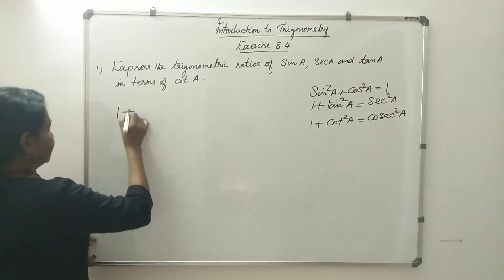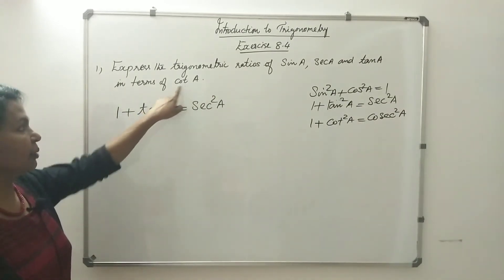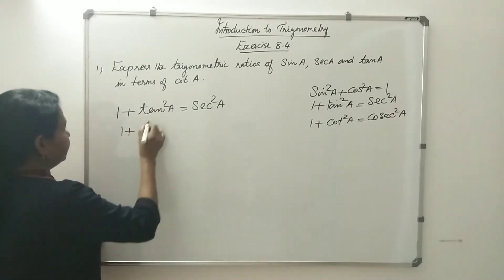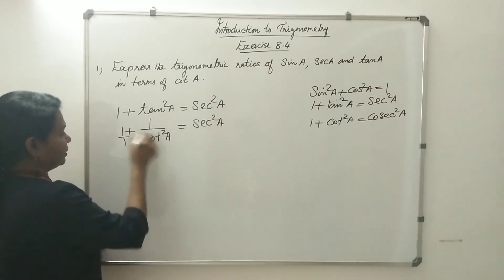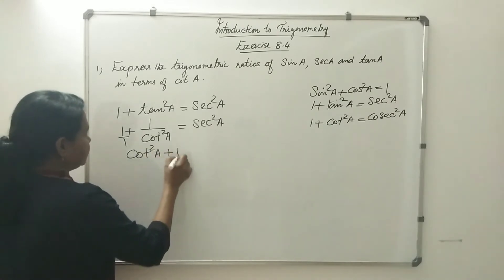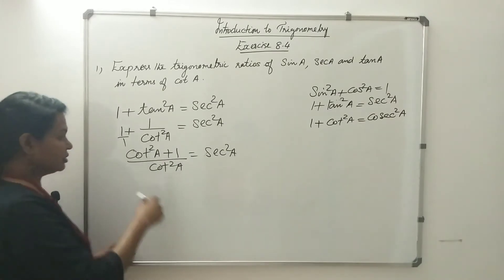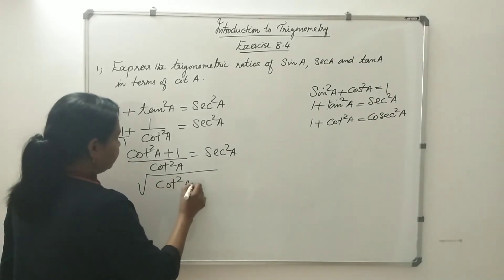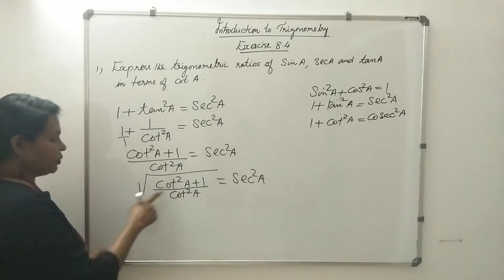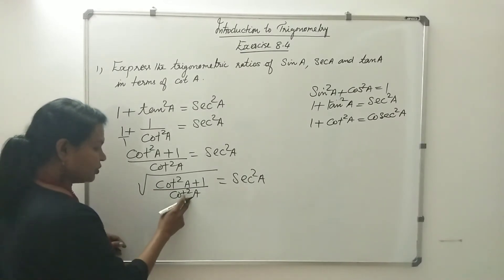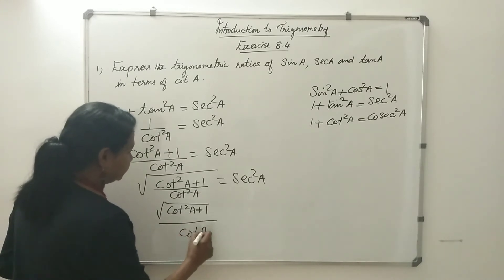Now, 1 plus tan²A equals sec²A. We use secA in terms of cot. Since tanA equals 1 divided by cotA, we write 1 plus 1 divided by cot²A equals sec²A. That gives us (cot²A plus 1) divided by cot²A equals sec²A. Taking the square root, secA equals the square root of (cot²A plus 1) divided by cot²A.